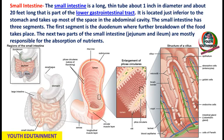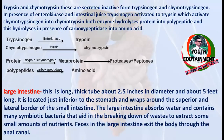The small intestine is a long, thin tube about one inch in diameter and about 20 feet long, forming part of the lower gastrointestinal tract. It is located just inferior to the stomach and takes up most of the space in the abdominal cavity. The large intestine is a thick tube about 2.5 inches in diameter and about 5 feet long.